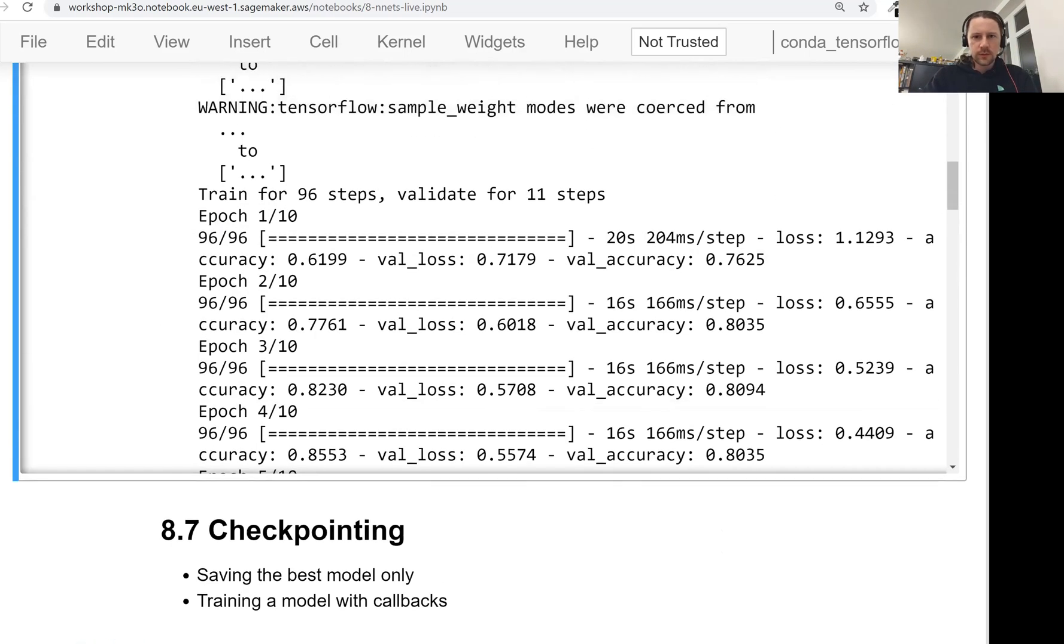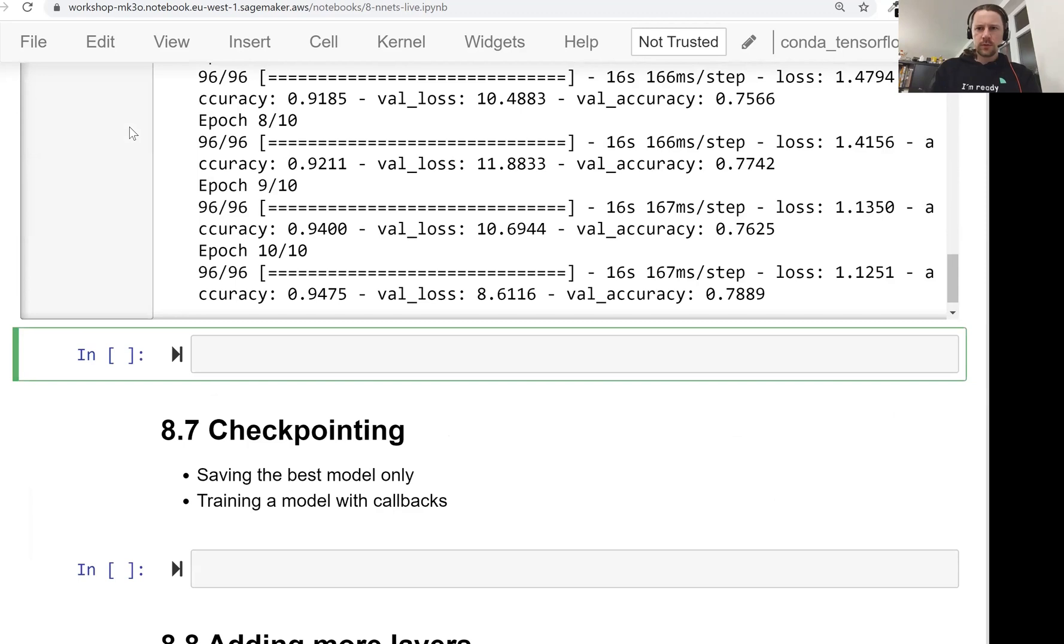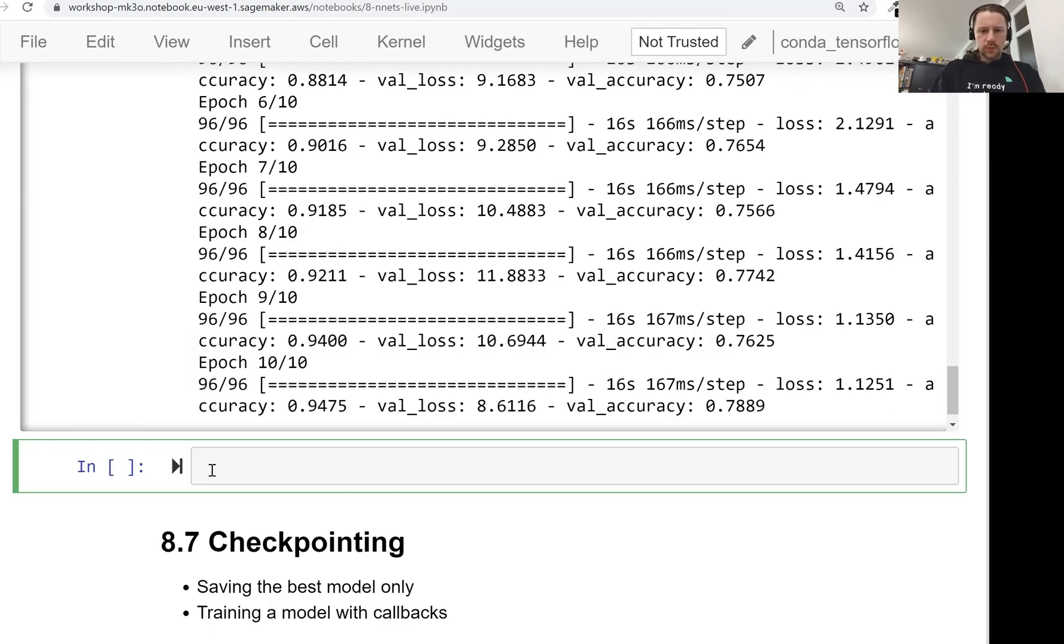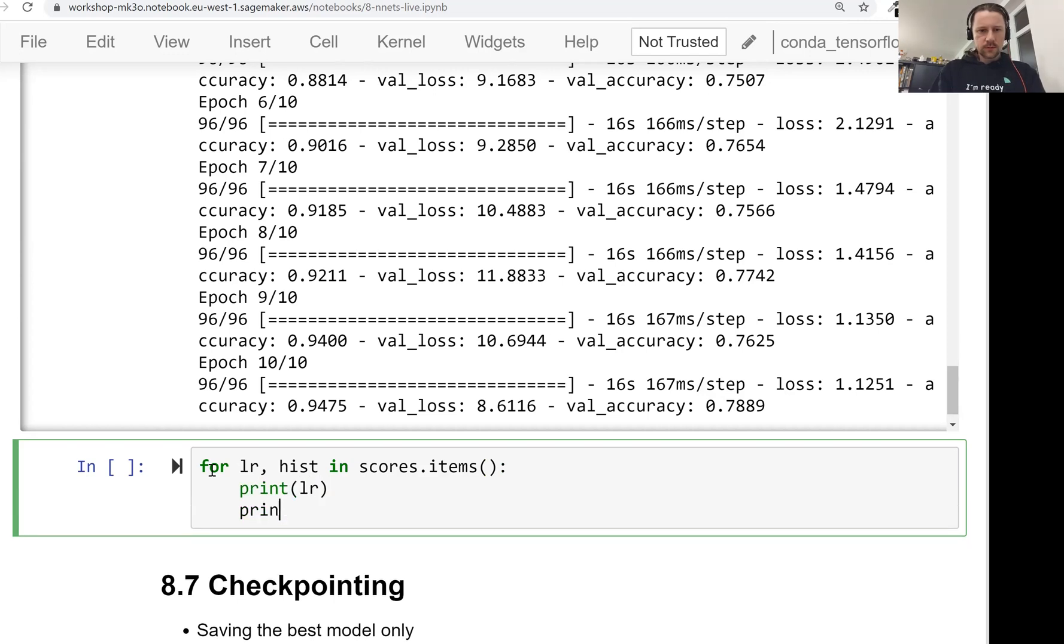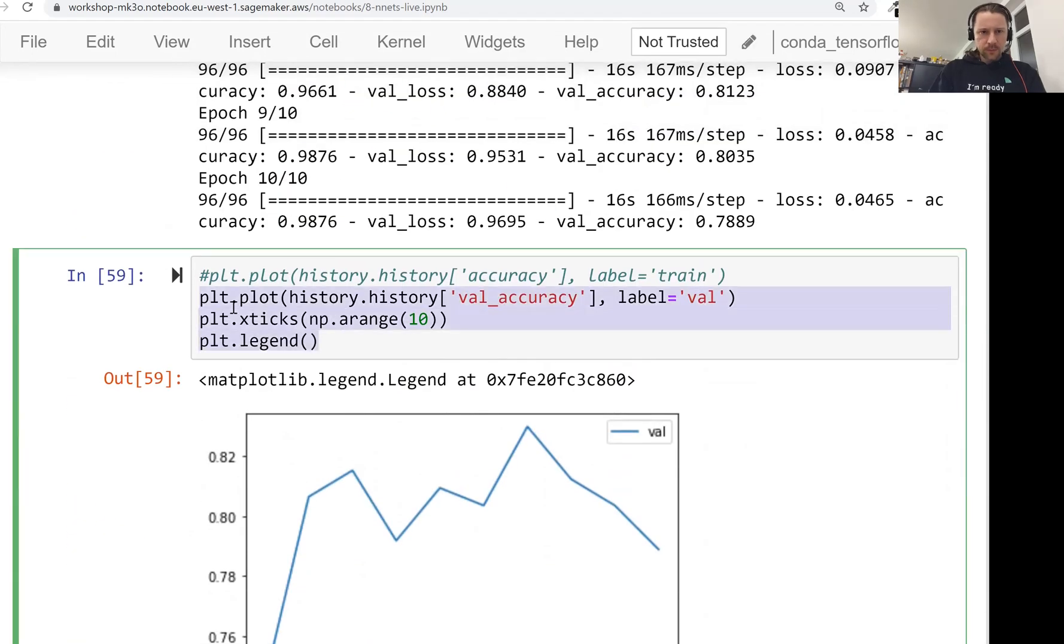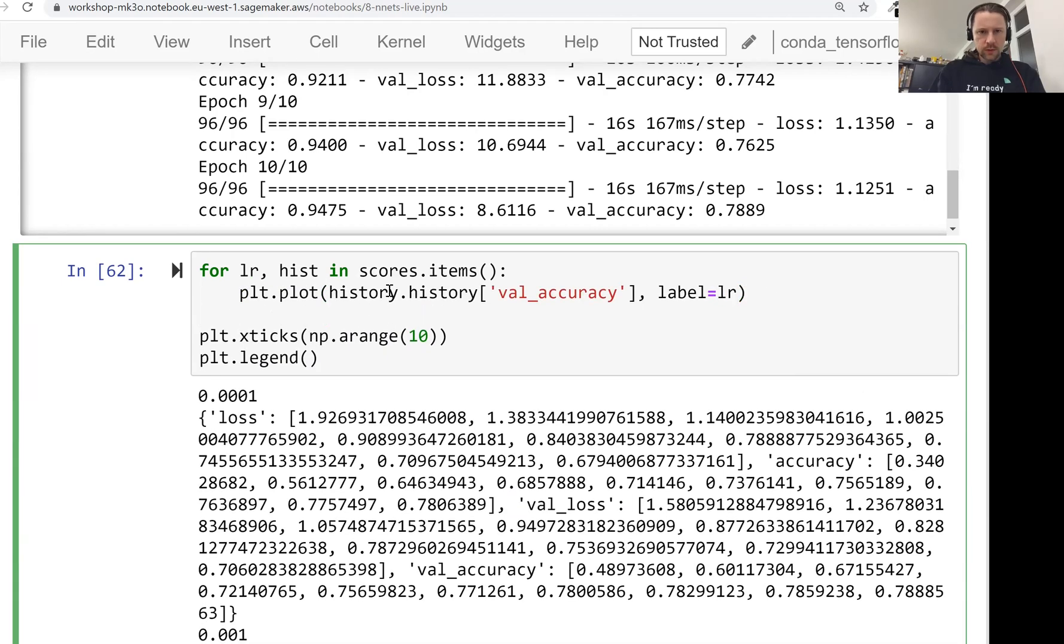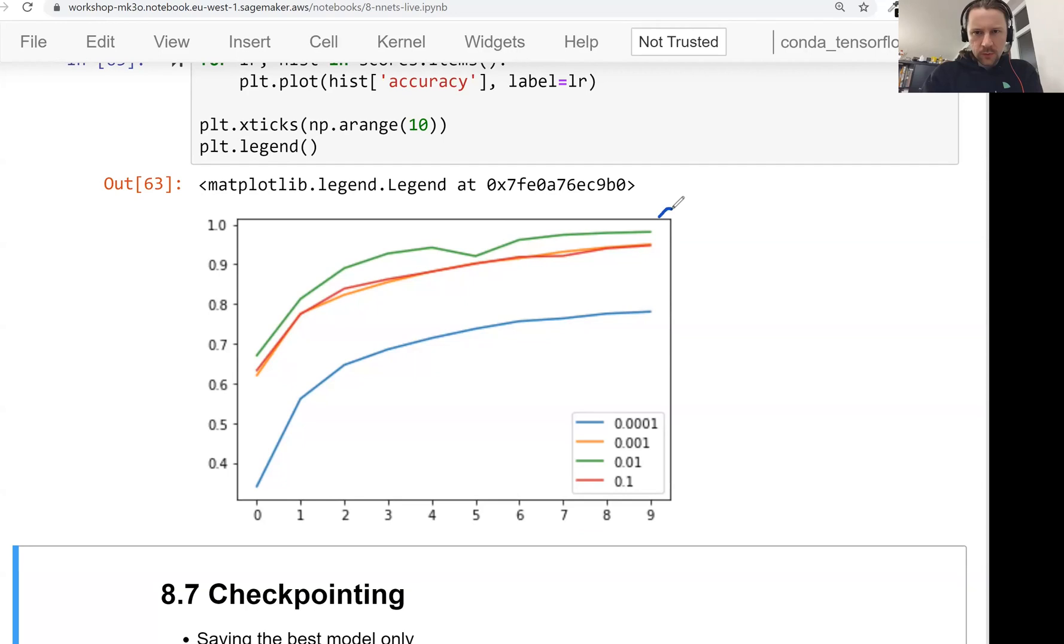Okay, it finished. So let's see what we have here. So what I want to do now is just plot this. I don't want to go through all these logs. So we want to have a loop for learning rate history in scores items. Just to see what is inside. So this is the history object and this is the learning rate. So now let me copy the code for plotting.